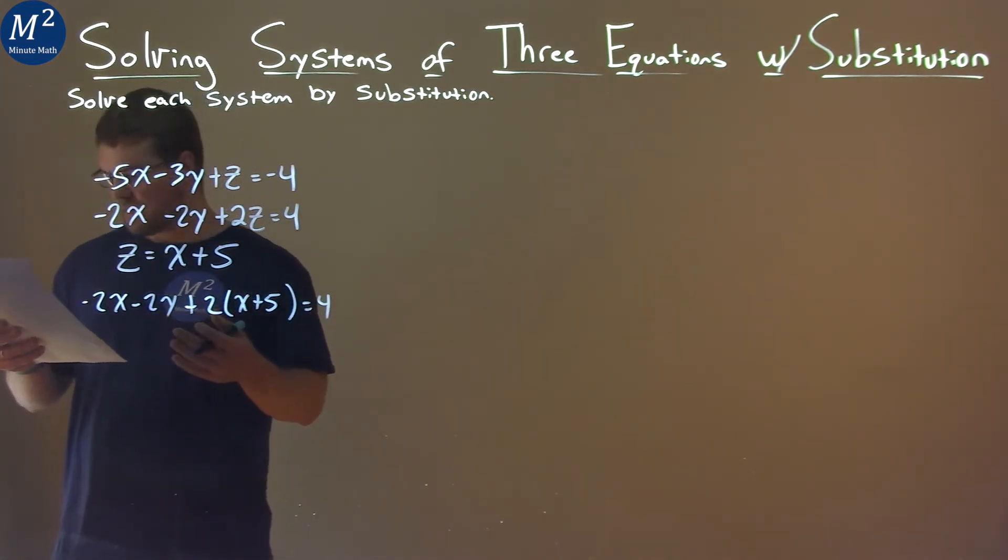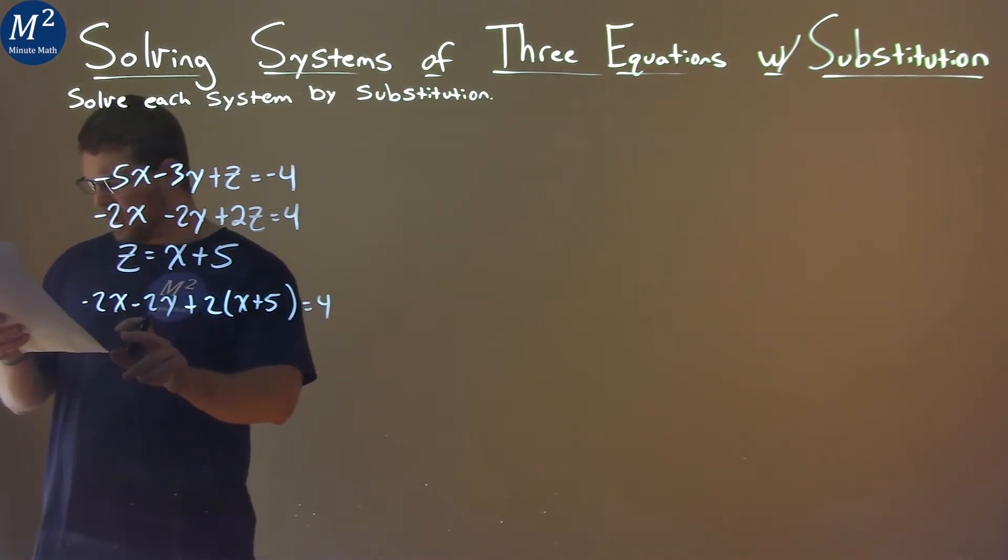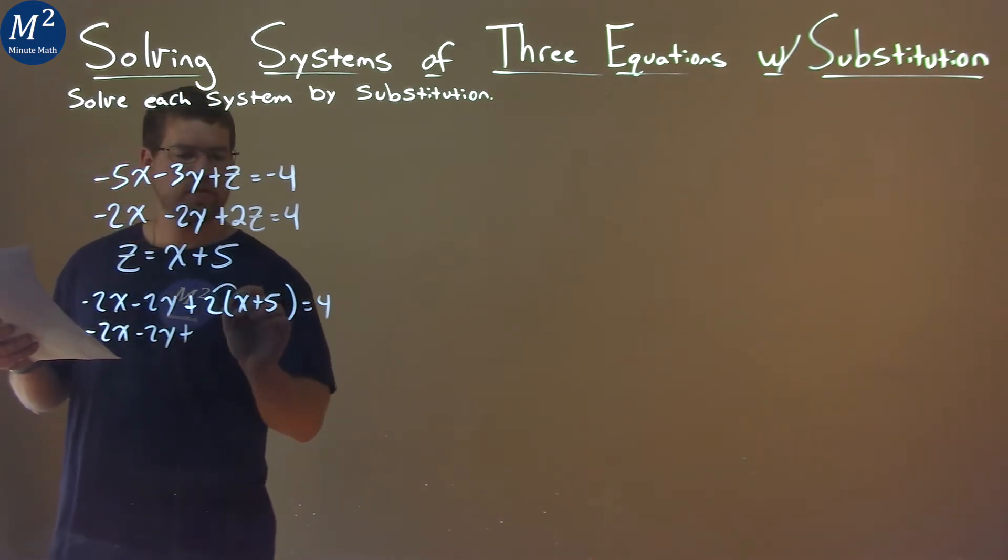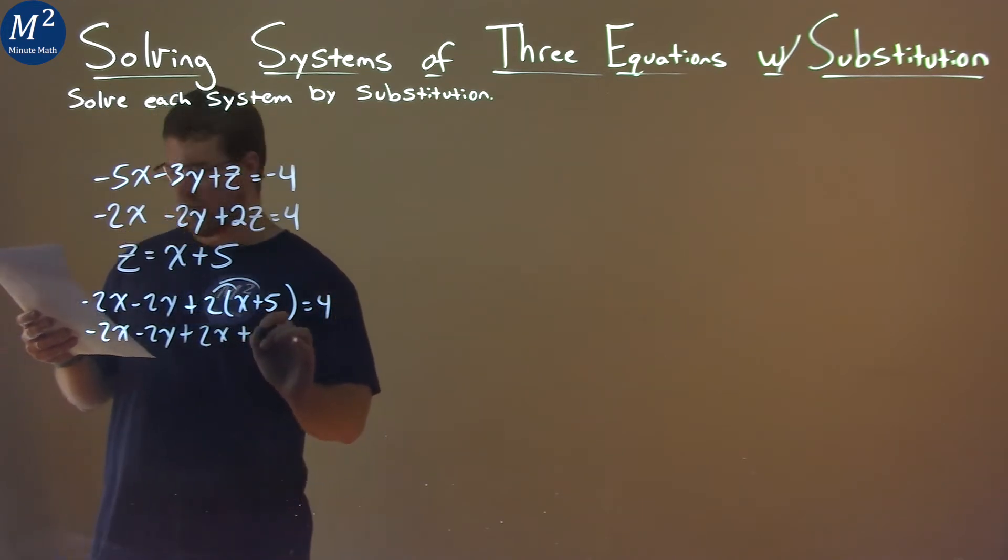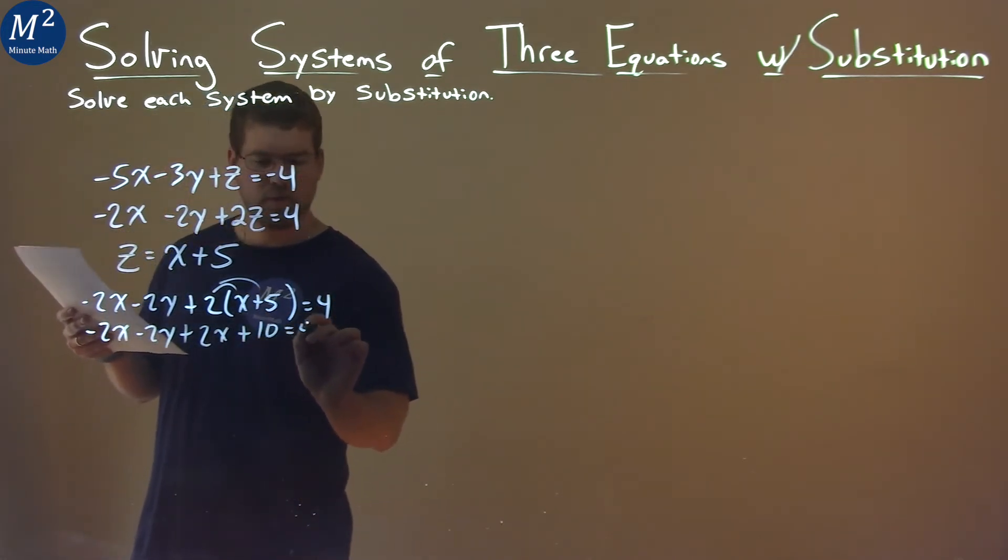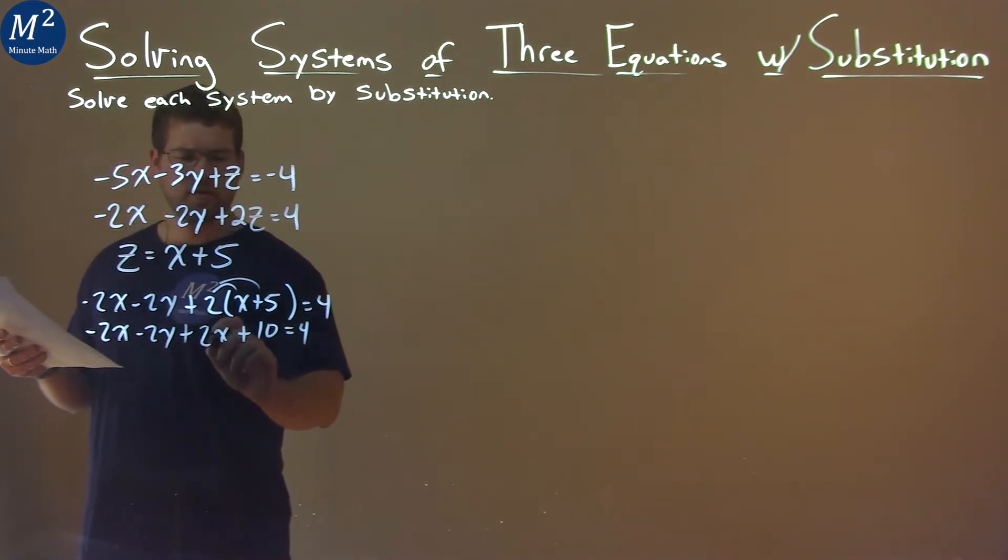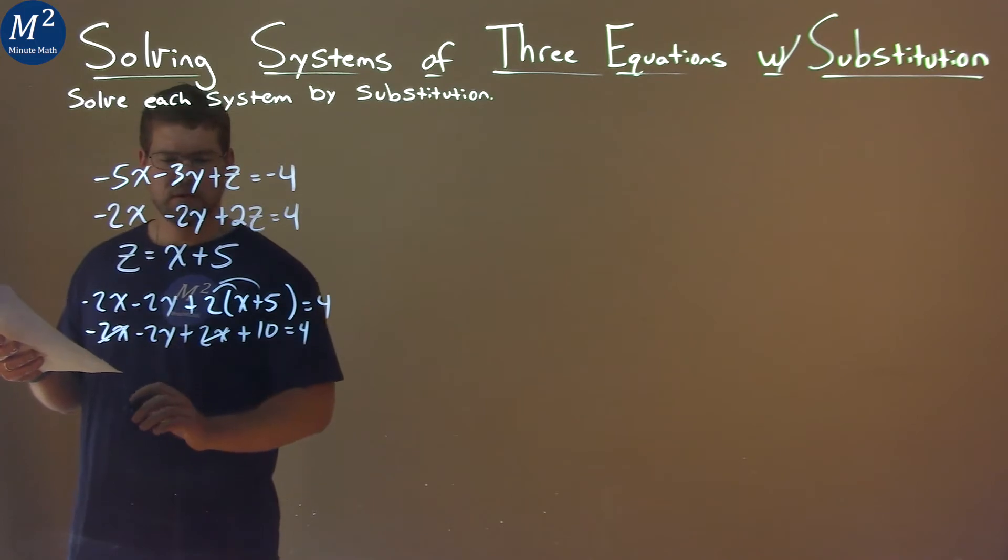Let's simplify this, see if we have our y's and x's separated. We go down, we have negative 2x minus 2y, plus, distribute the 2, and we have 2x, plus 2 times 5 is 10, equals 4. Now combining like terms, negative 2x plus 2x cancels each other out.